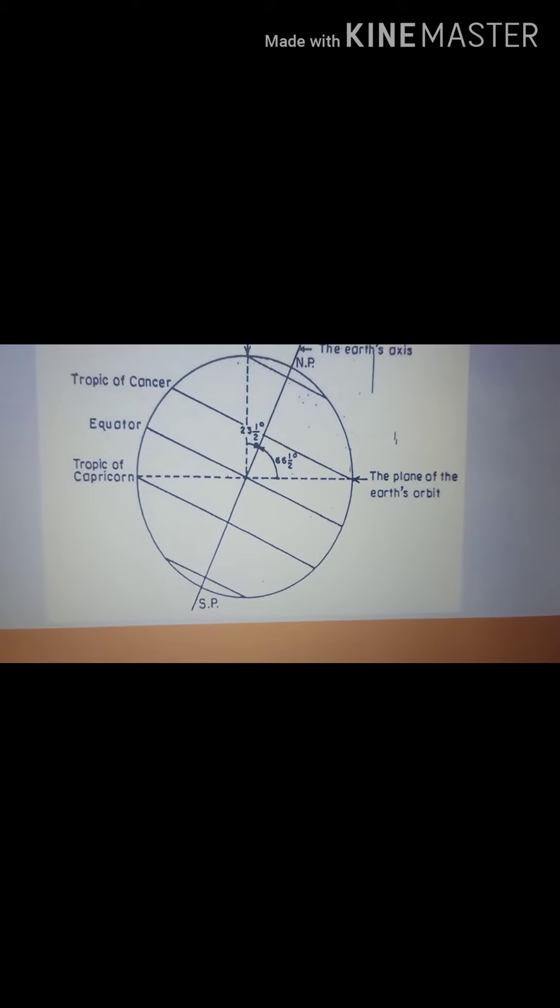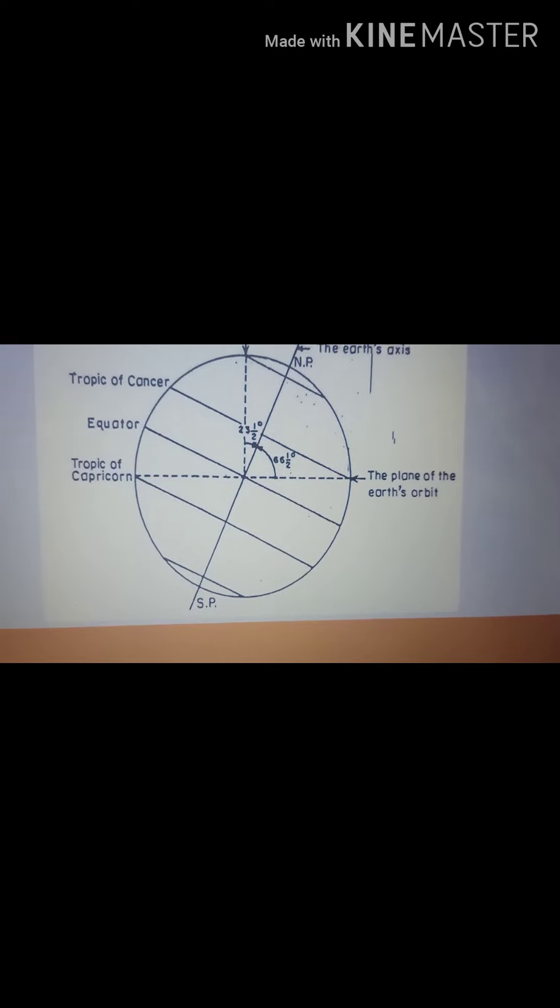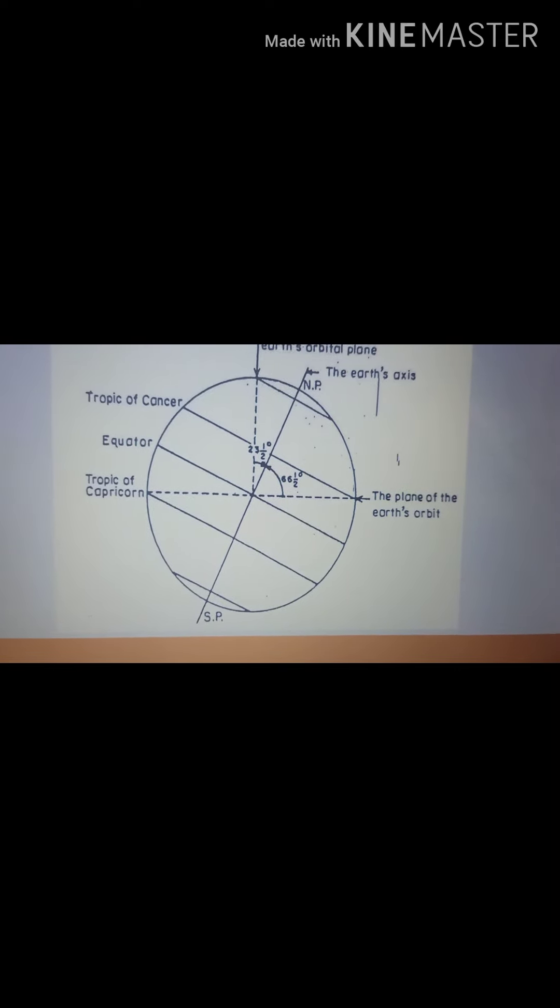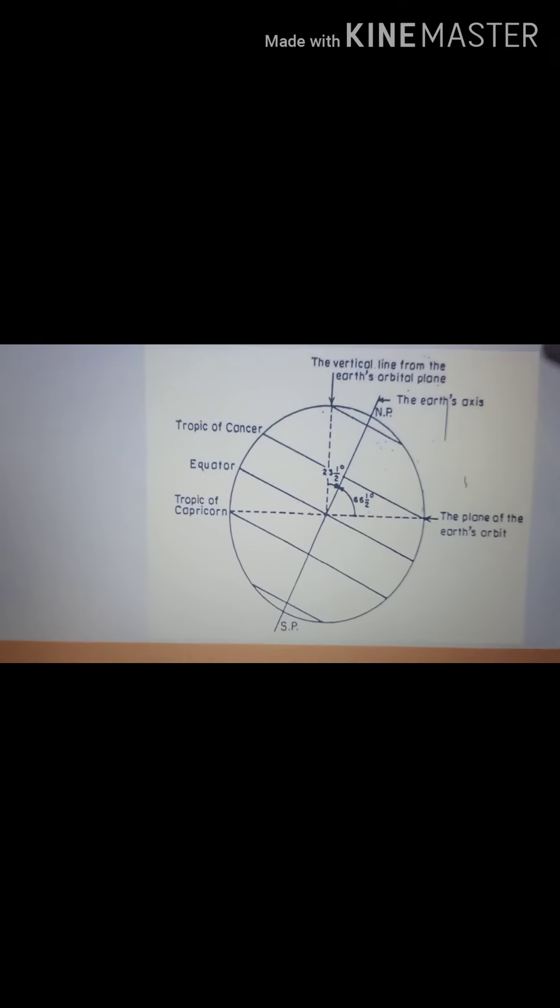The earth's axis is actually an imaginary line on which the earth is believed to be rotating. In this diagram over here you can see that the two ends of the axis are the north pole and the south pole.